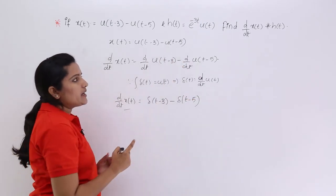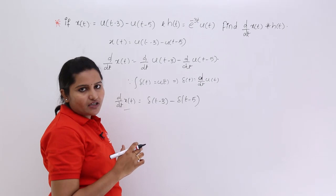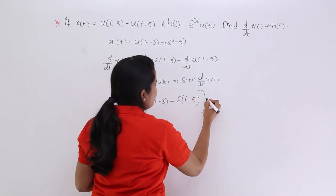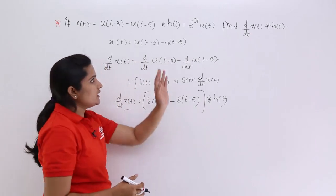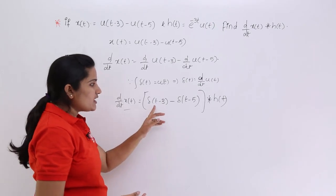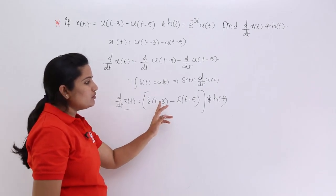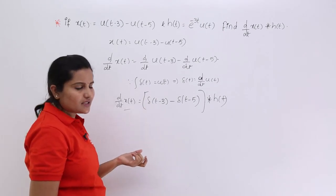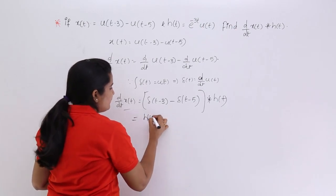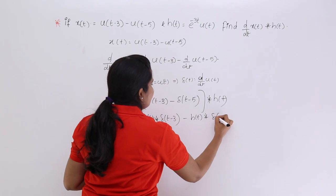Now we have the value of d/dt of x(t), with which we need to perform convolution with the impulse response h(t) = e^(-3t)u(t). We apply the distributive property: if you have addition or subtraction of signals convolved with any signal, you can do the convolution separately and then perform the addition or subtraction. So this becomes h(t) convolved with δ(t-3) minus h(t) convolved with δ(t-5).